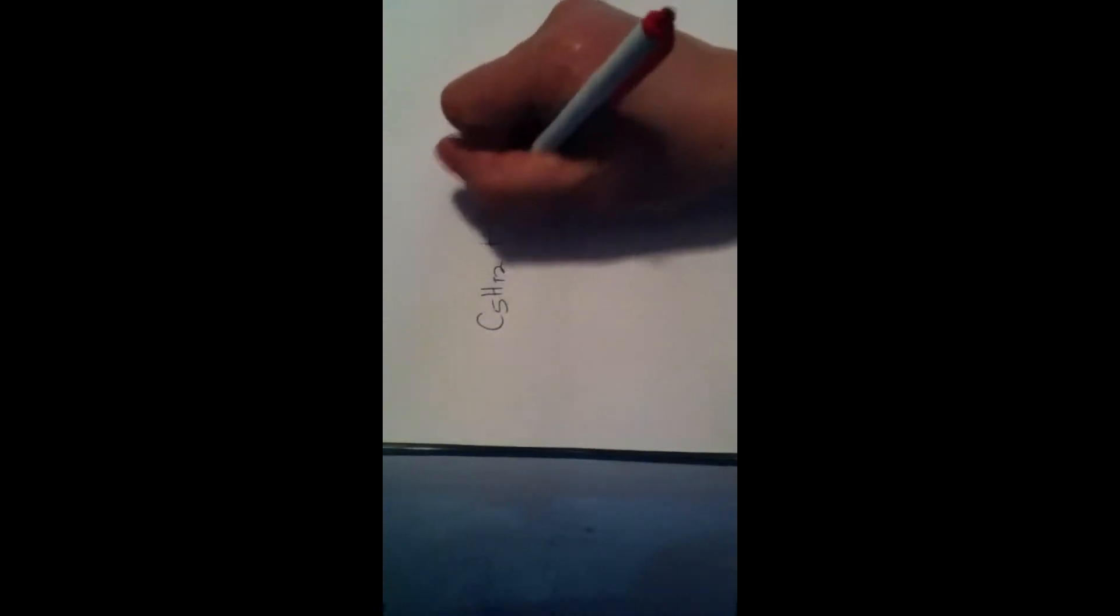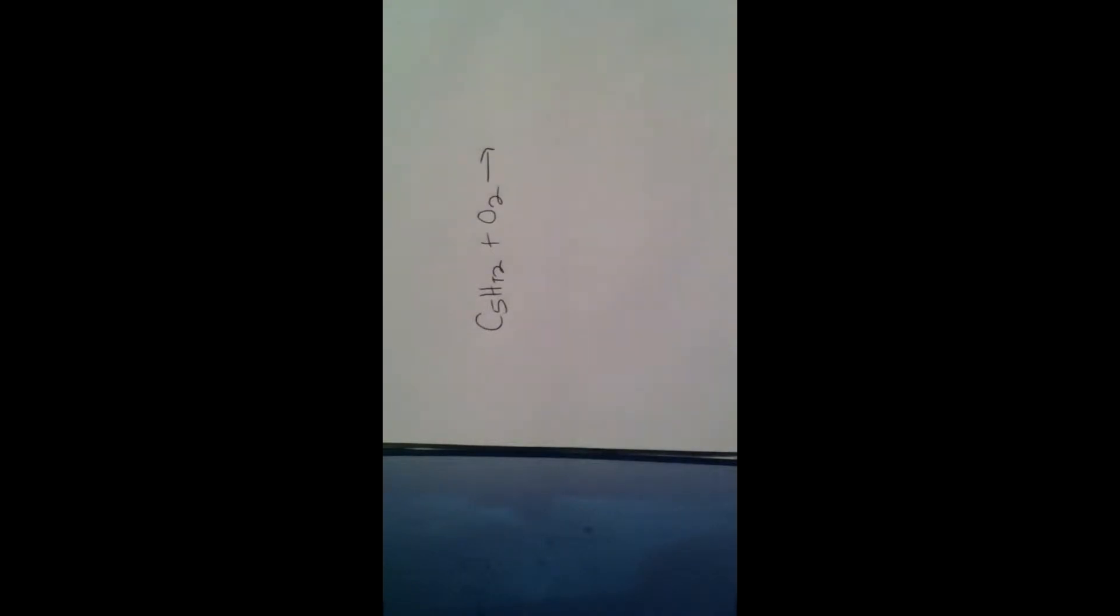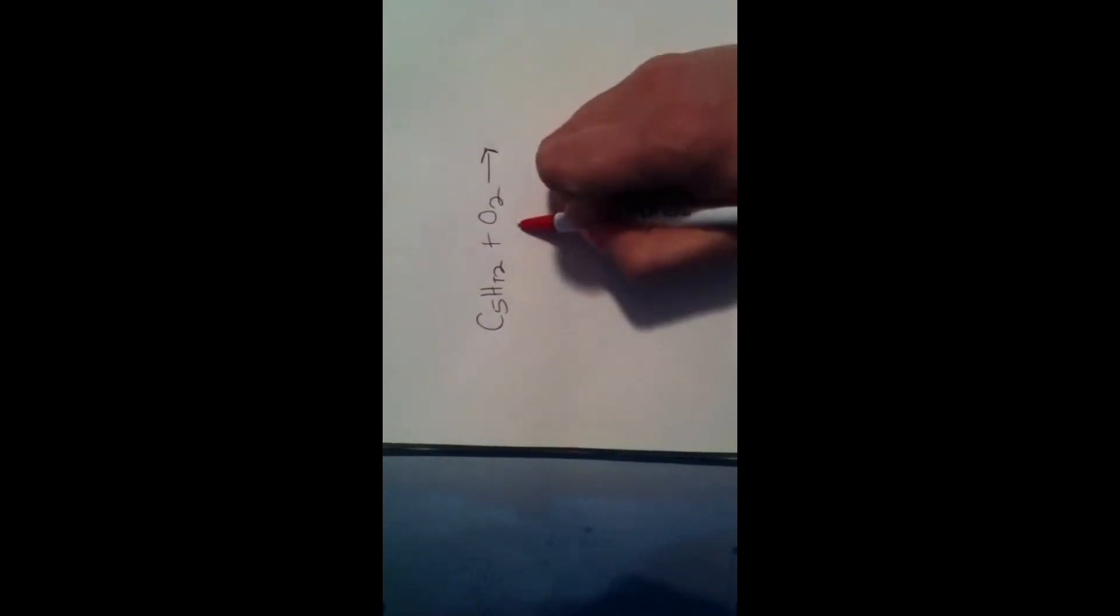Okay, so our first one we're starting with is C5H12 and we are combining that with oxygen. Now if we take a look at this, we have a hydrocarbon and oxygen. So that tells me I'm going to have a combustion reaction, which will give us carbon dioxide and water. So when we look at this, let's take a look at our balancing. I'm just going to put C here for combustion.